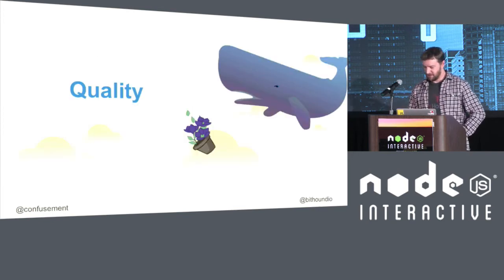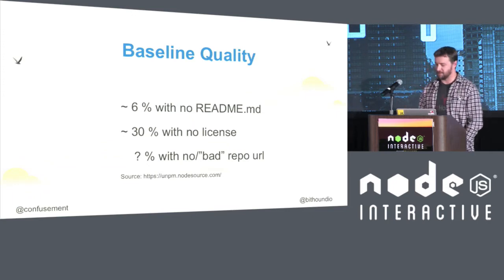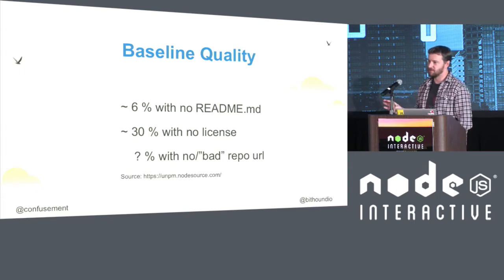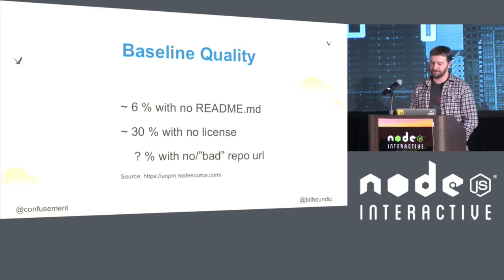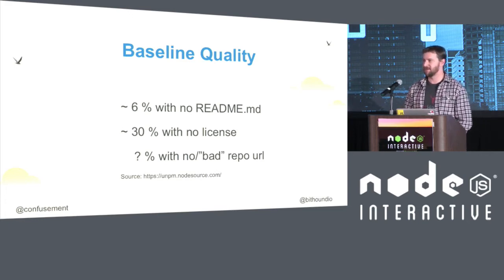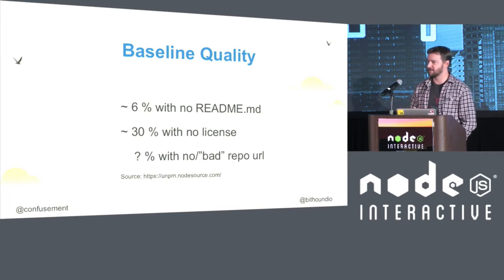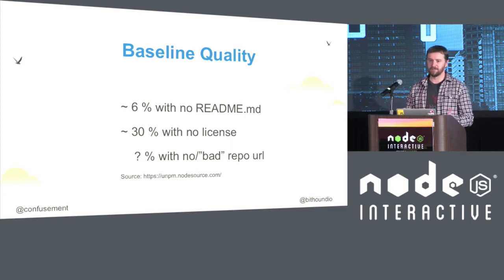Let's talk about quality first. There's a bit of a baseline quality issue — I got these numbers from NodeSource, who did a great animated graphic about understanding NPM. These numbers are a little old but the percentages mostly hold. Out of all NPM modules, about 6% don't have a README file, and about 30% have no licenses or no clear definition of a license. These are the kinds of packages that maybe we need to red flag and help the community stay away from, because it indicates a lack of bare minimum understanding of the information needed for someone to consume your software.